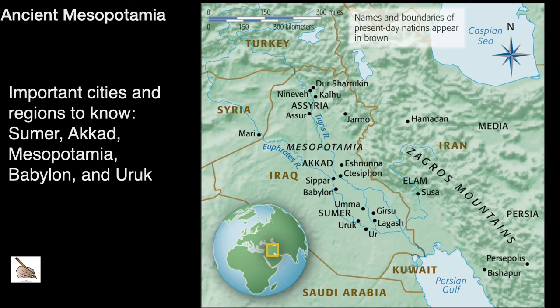Some important cities and regions to know include Sumer, Akkad, Mesopotamia, Babylon, and Uruk. The 19th century excavations opened up the public eye to art in the ancient Near East. Most reliefs depicting warfare and hunting, as well as statues of human-headed bulls, are found from palaces of the Assyrians.